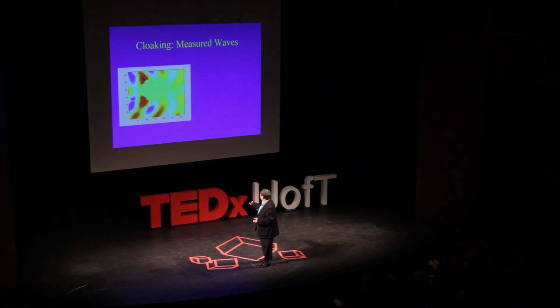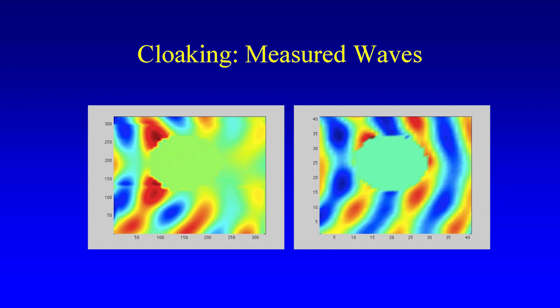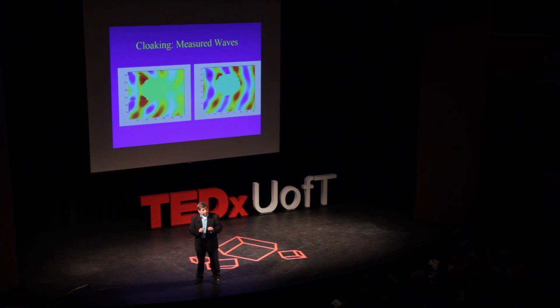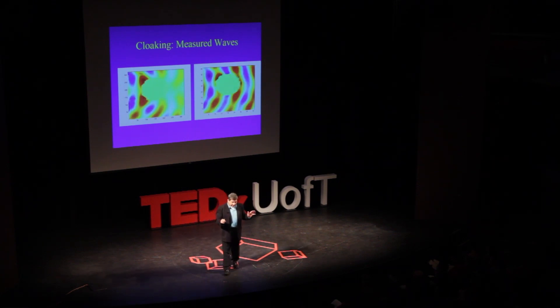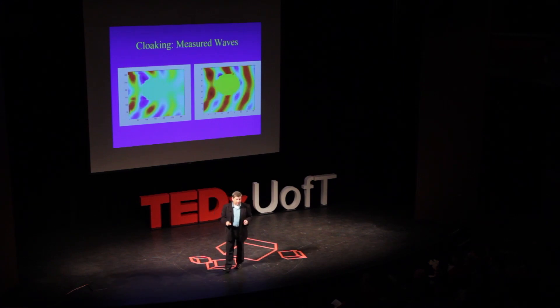Here is an animation of the actual measured fields. When the waves hit the cylinder without the cloak, they scatter all over the place and create a shadow region at the back. But when we switch on the cloak, the wave passes right through as if nothing were there. And remember, this is a very thin cloak — its thickness doesn't depend on the size, shape, or composition of the object. We think this is a very practical way for making invisibility cloaks, with a very bright — or shall we say invisible — future.